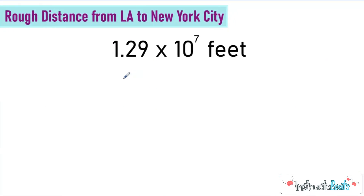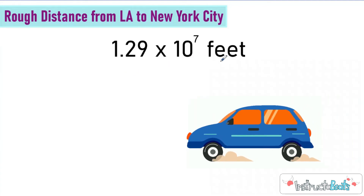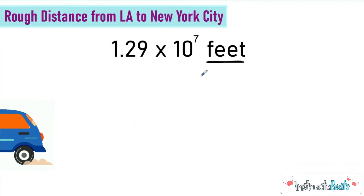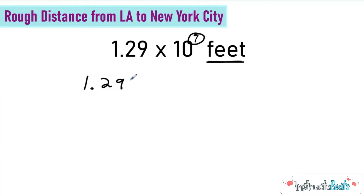Let's practice using this shortcut. We have the rough distance from Los Angeles to New York City — not in miles, but in feet. In miles it's a little under 3,000, so this is a rough estimate. Our significant digits are going to be 1, 2, and 9, so I'm going to write 1.29. I know I'm multiplying by a positive power of 7, which means I'm going to move this to the right seven times.